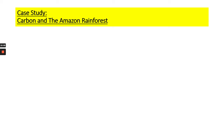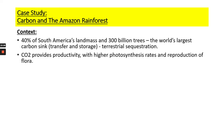Finally, in carbon, we look at the Amazon rainforest as a case study — more of an example of how important carbon is and its role in rainforests. The Amazon covers 40% of South America's land mass and contains 300 billion trees. It is the largest carbon sink in the world — the largest terrestrial transfer and storage of carbon. CO2 provides productivity to it: carbon provides the tools the soil needs to grow trees, supporting higher photosynthesis rates and the reproduction of plants.